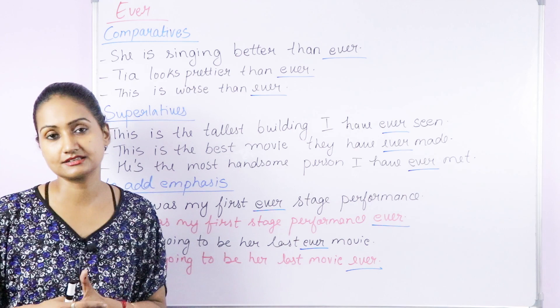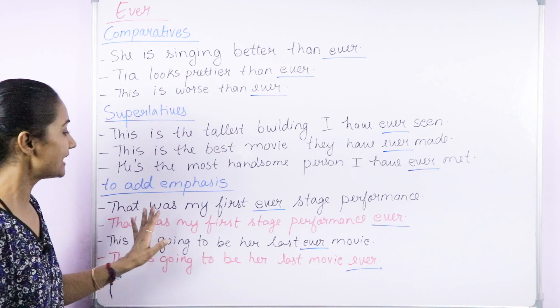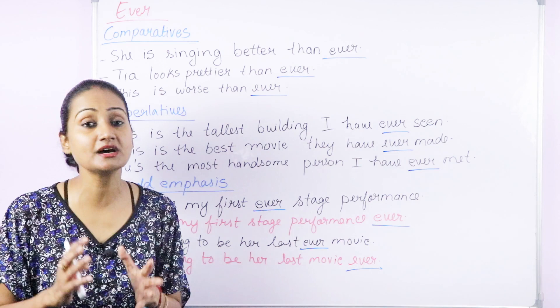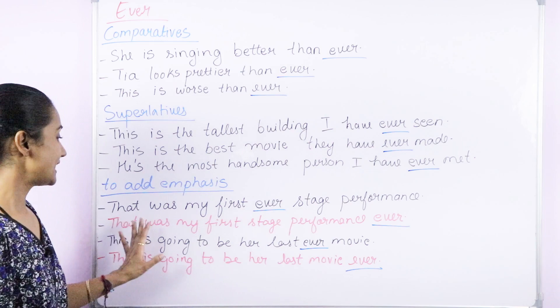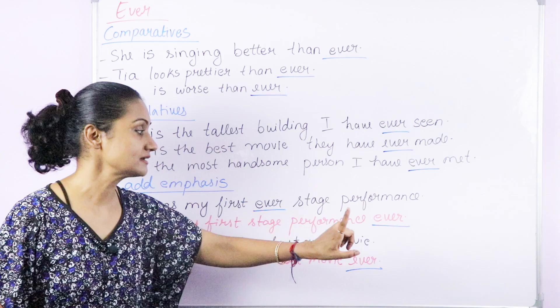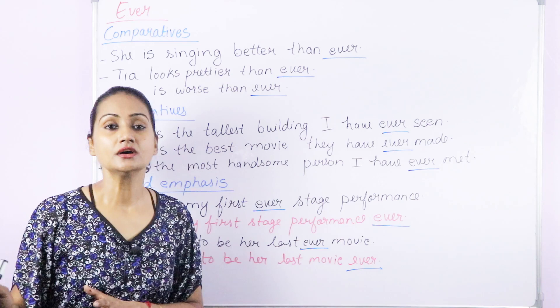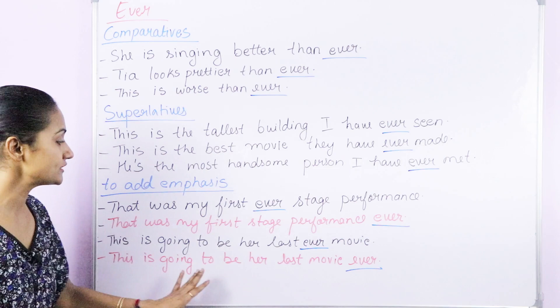We also use ever to add emphasis to a sentence. For example: That was my first ever stage performance. You could say 'that was my first stage performance,' but adding ever gives it more emphasis. Ever can come before or after the noun: That was my first ever stage performance, or: That was my first stage performance ever — both are correct. Another example: This is going to be her last ever movie — after this she is never going to do a movie. Or: This is going to be her last movie ever.